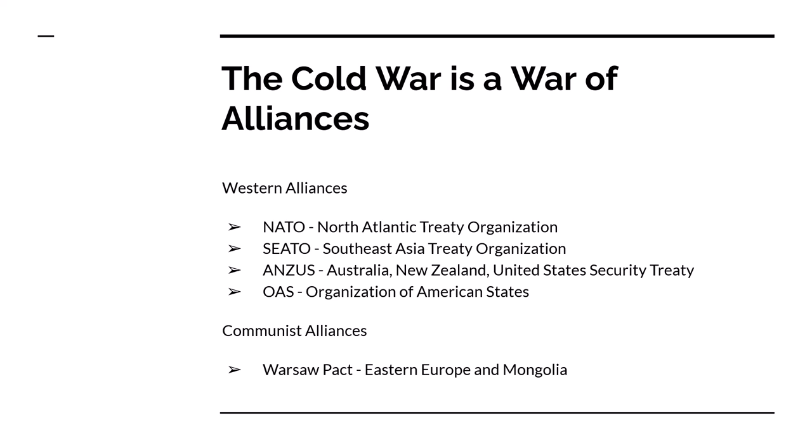In response to the alliances formed by the free world, the communist nations formed the Warsaw Pact. Members of the Warsaw Pact were the Union of Soviet Socialist Republics, Eastern European countries controlled by the Soviet Union, and a couple of other allies such as Cuba. The communist world also included China, but China and the Soviet Union did not trust each other, so China was not part of the Warsaw Pact.